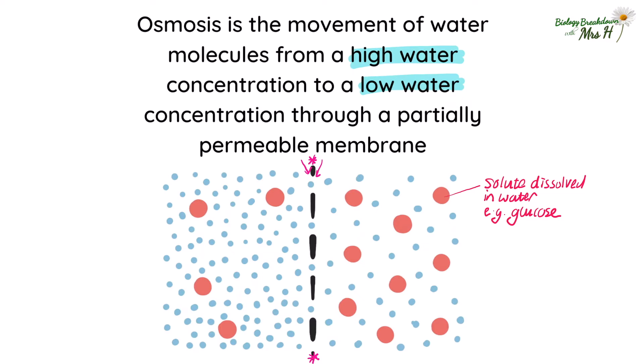If we look back at the definition of osmosis, focusing on the movement of water molecules, then we know the water molecules will move in this direction from left to right. One more thing before we move on: don't forget to write that water molecules move from a high water concentration to a low water concentration. You must emphasize the water.